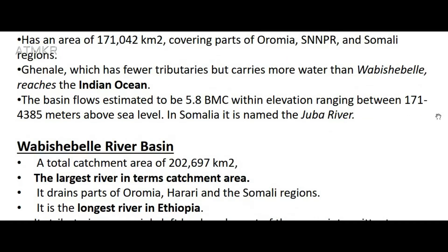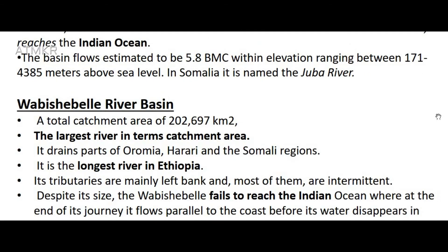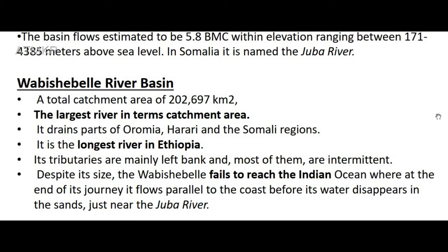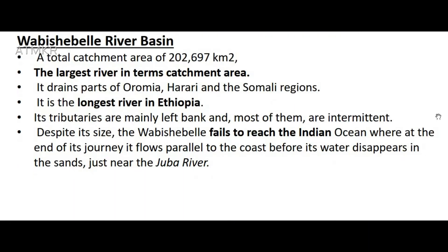The Wabashabale River Basin has a total catchment area of 202,697 square kilometers, making it the largest river in terms of catchment area. It drains parts of Oromia, Harari, and the Somali regions, and is the longest river in Ethiopia. Its tributaries are mainly left bank and most of them are intermittent. Despite its size, Wabashabale fails to reach the Indian Ocean; at the end of its journey it flows parallel to the coast before its water disappears in the sands, just near the Juba River.